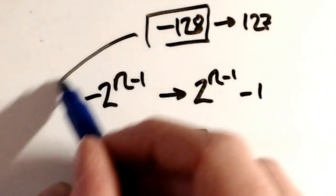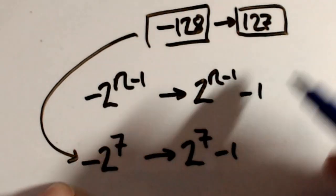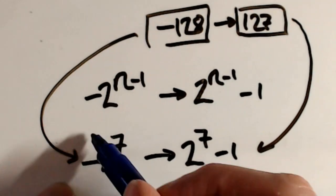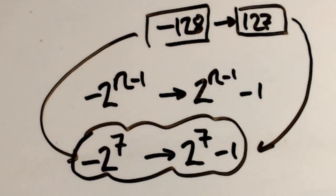That would give you positive 128, but then you're taking away the minus 1. So that's a handy formula to remember. So hopefully that's helped.